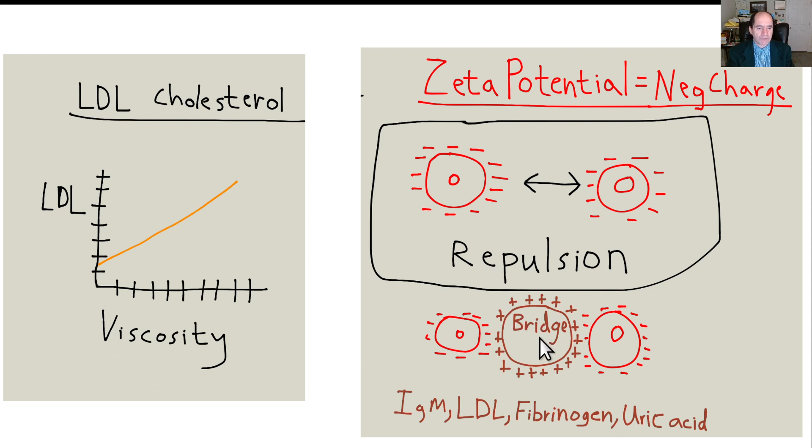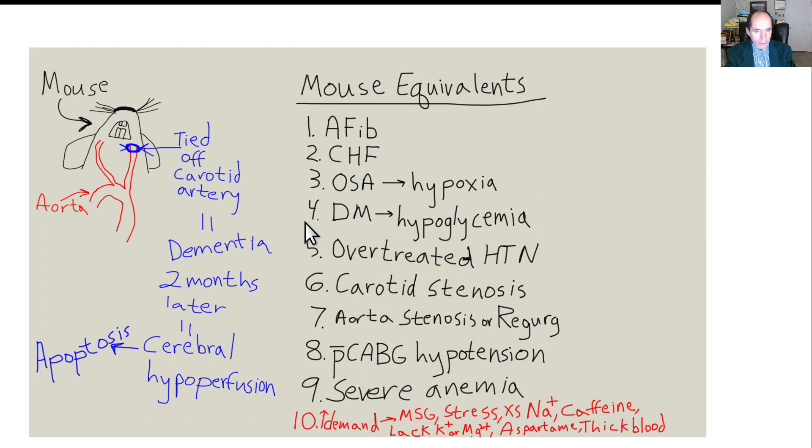So here we have a picture of a bridging molecule. Fibrinogen, which is increased with psychological stress, also does that. Uric acid, increased with too much fructose, corn syrup, too much meat. IgM antibodies, an acute infectious process, that can also be a bridging molecule, meaning that it'll stick the red blood cells together, overcoming their zeta potential, the negative charge on them. And that will make the blood more like a milkshake instead of like water. So pressure has to go up to pump a milkshake instead of water. So we talked about hypertension there.